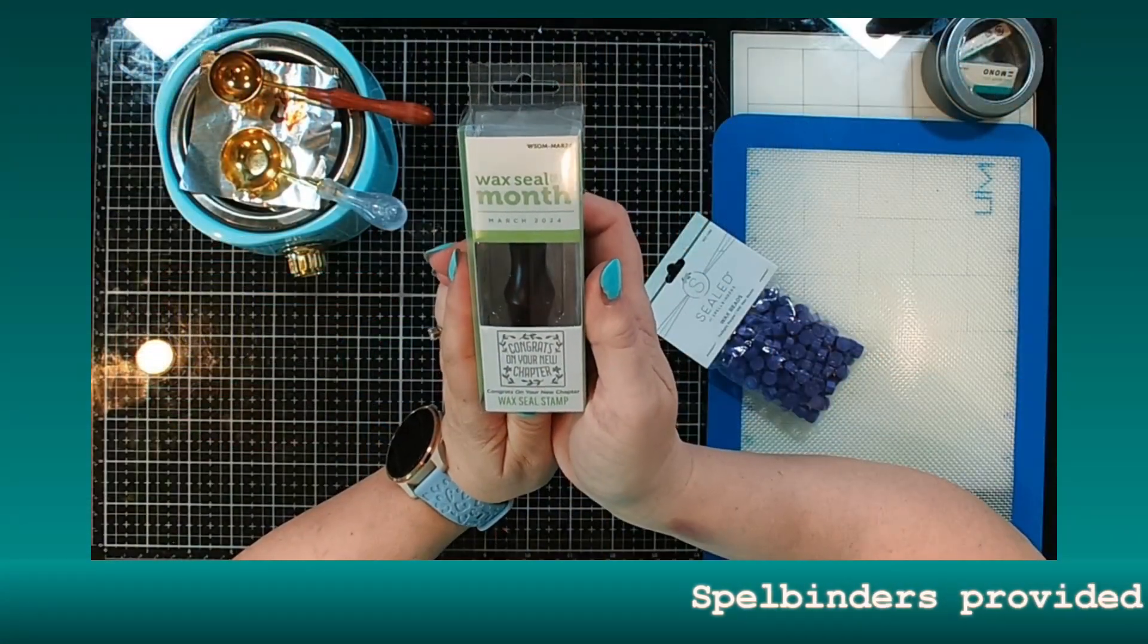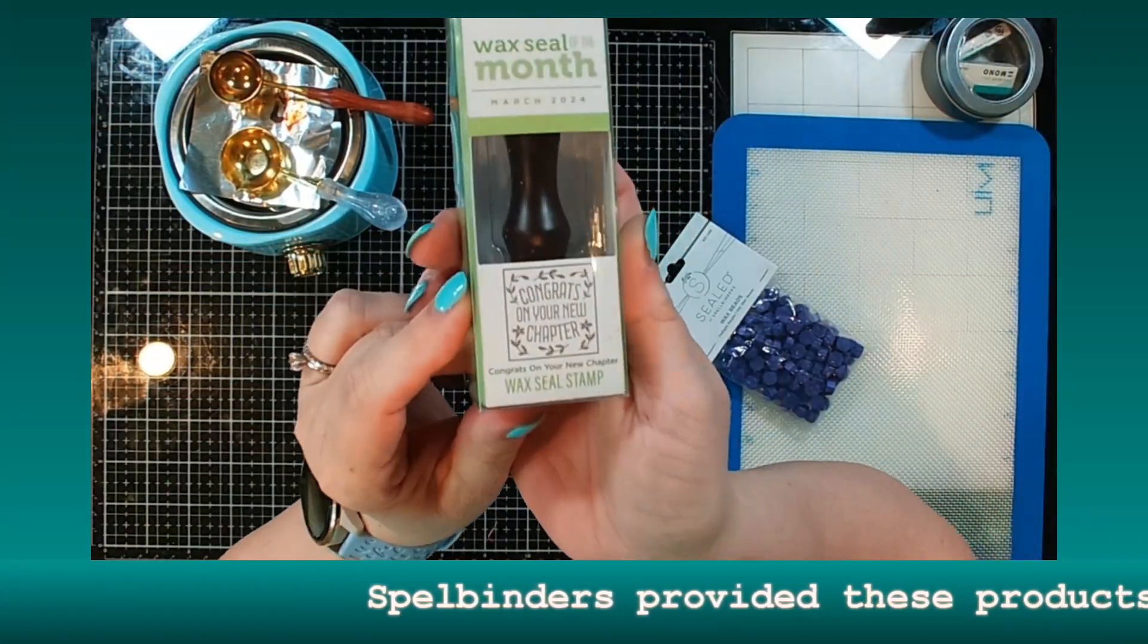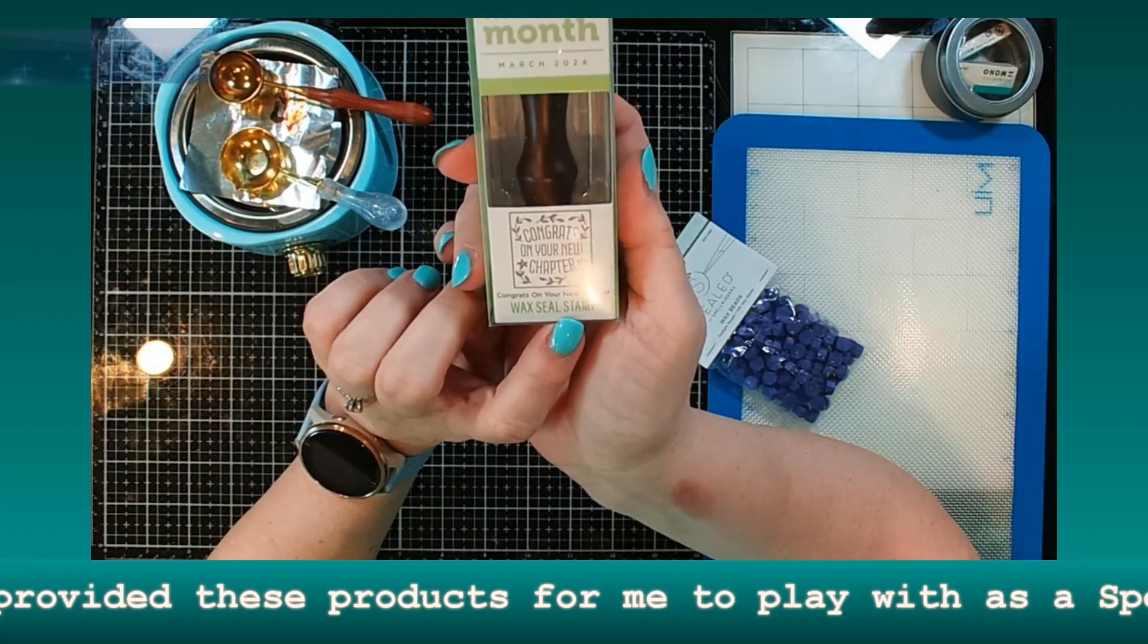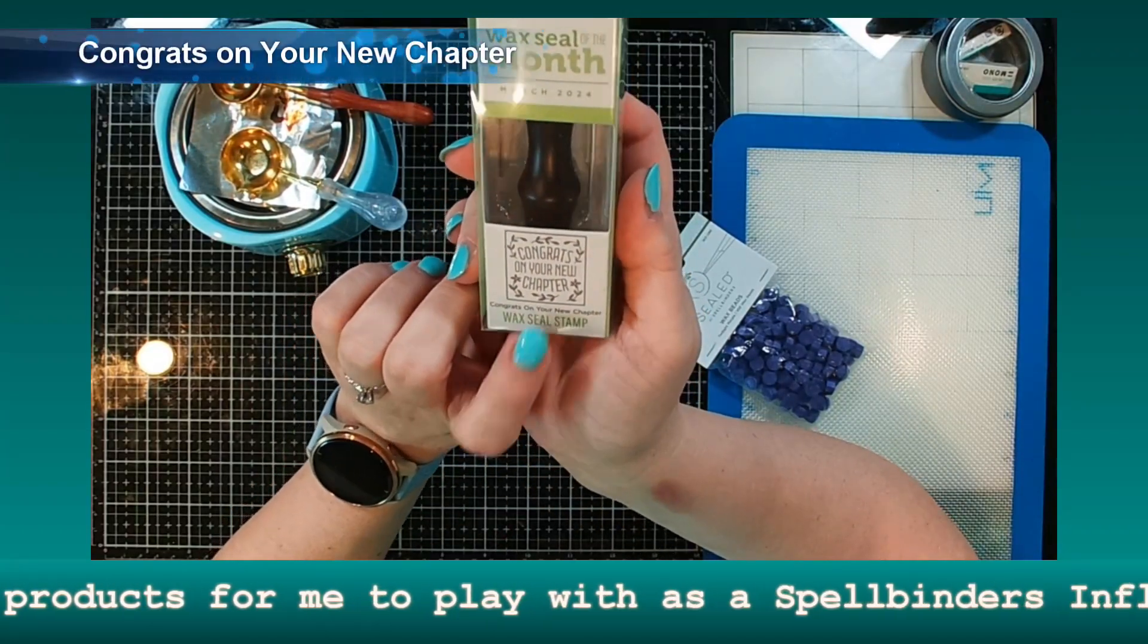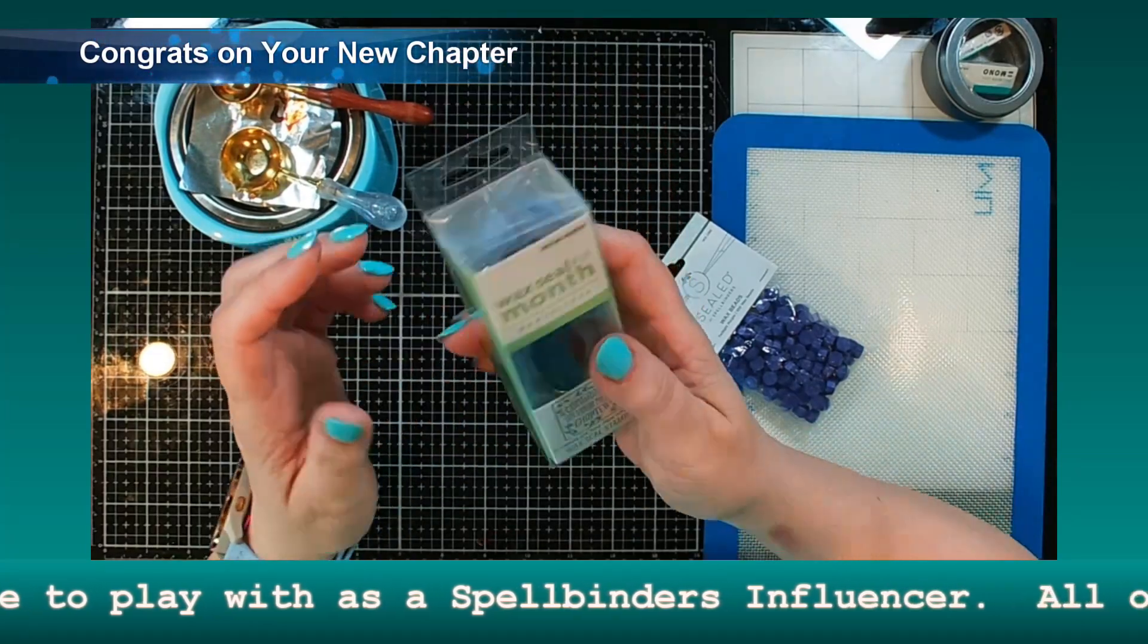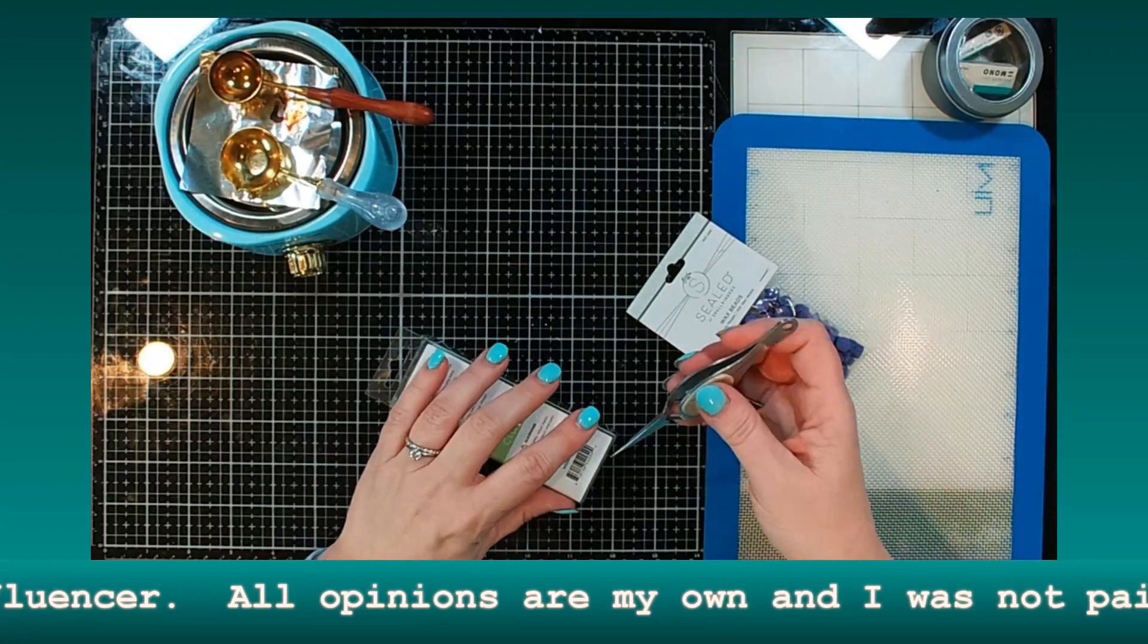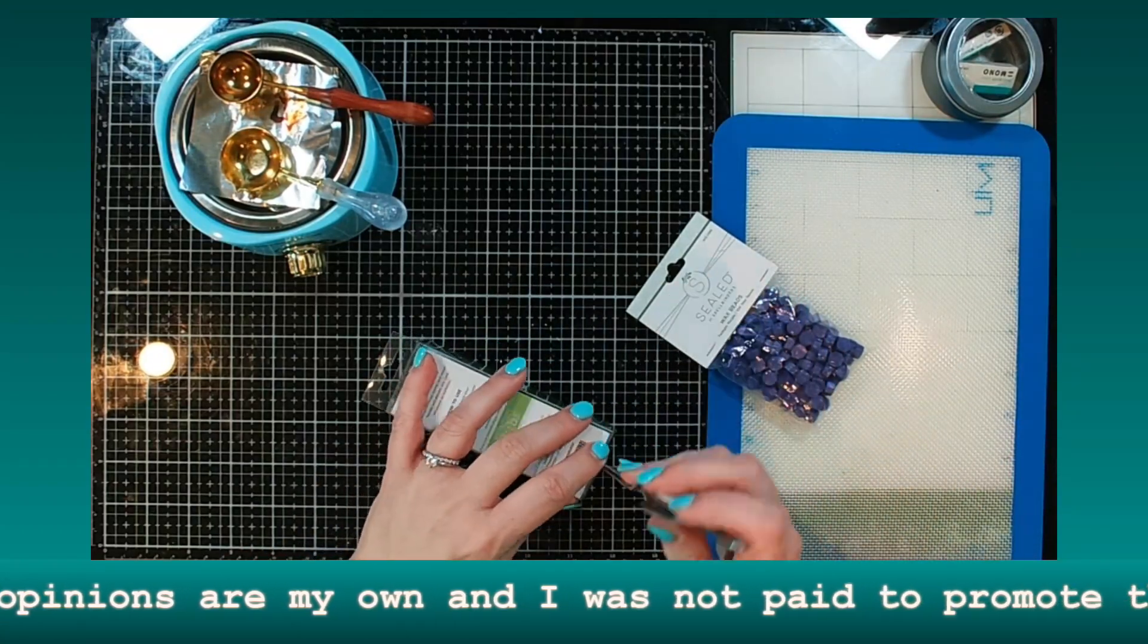Today I'm going to be making some wax seals and a project using the wax seal of the month from Spellbinders. This month it is congrats on your new chapter and it is a square wax seal unlike the oval and circular ones that we normally get. So let's go ahead and pop this out of the package.